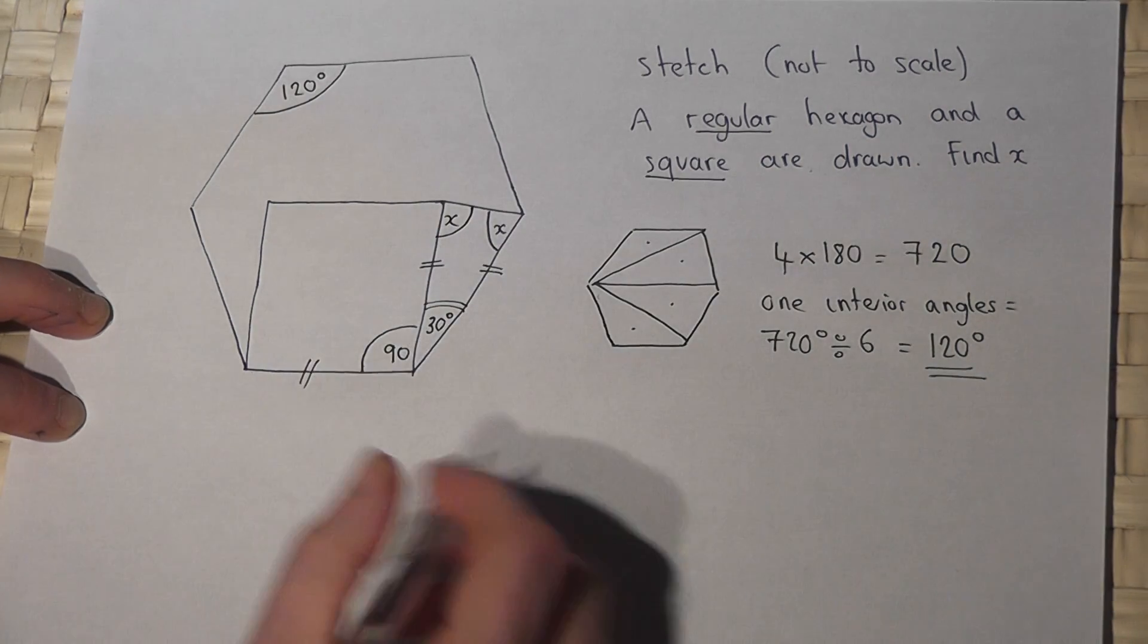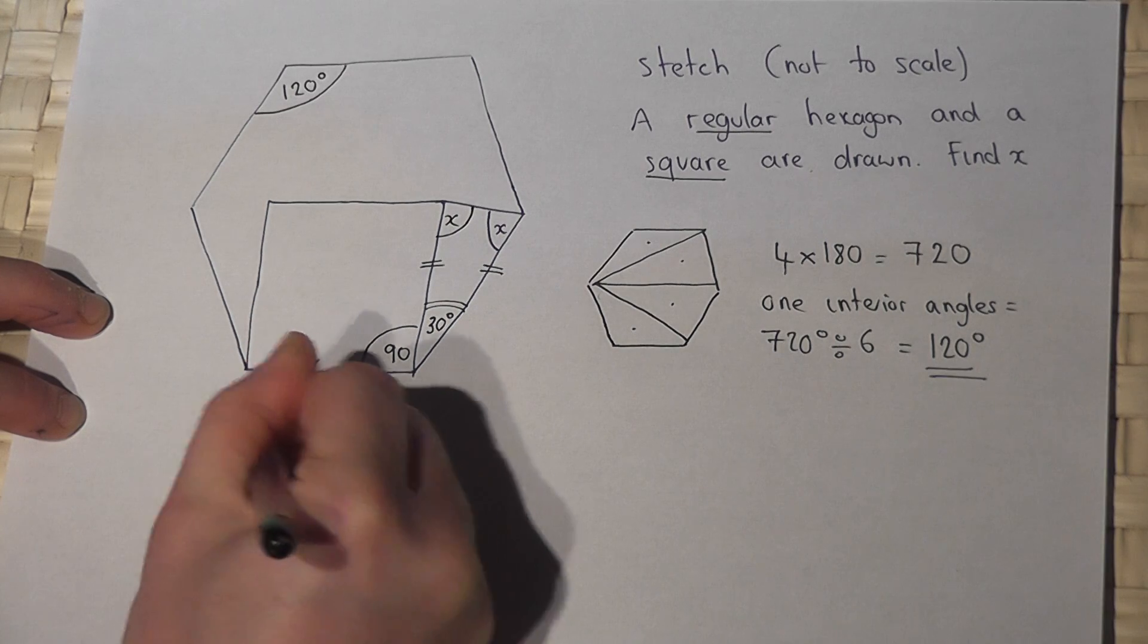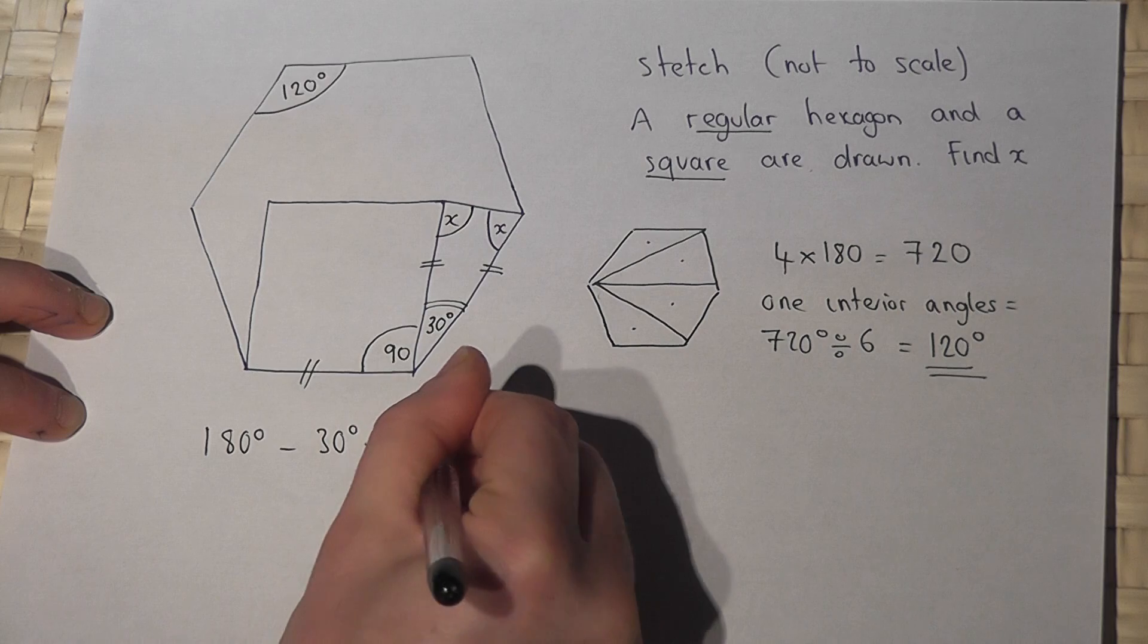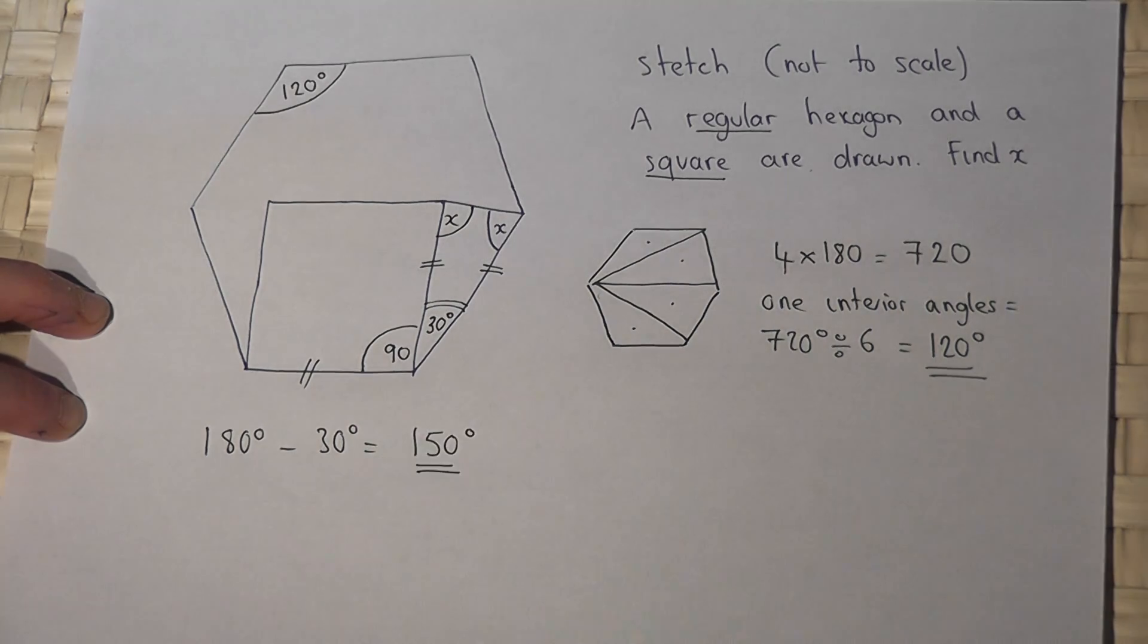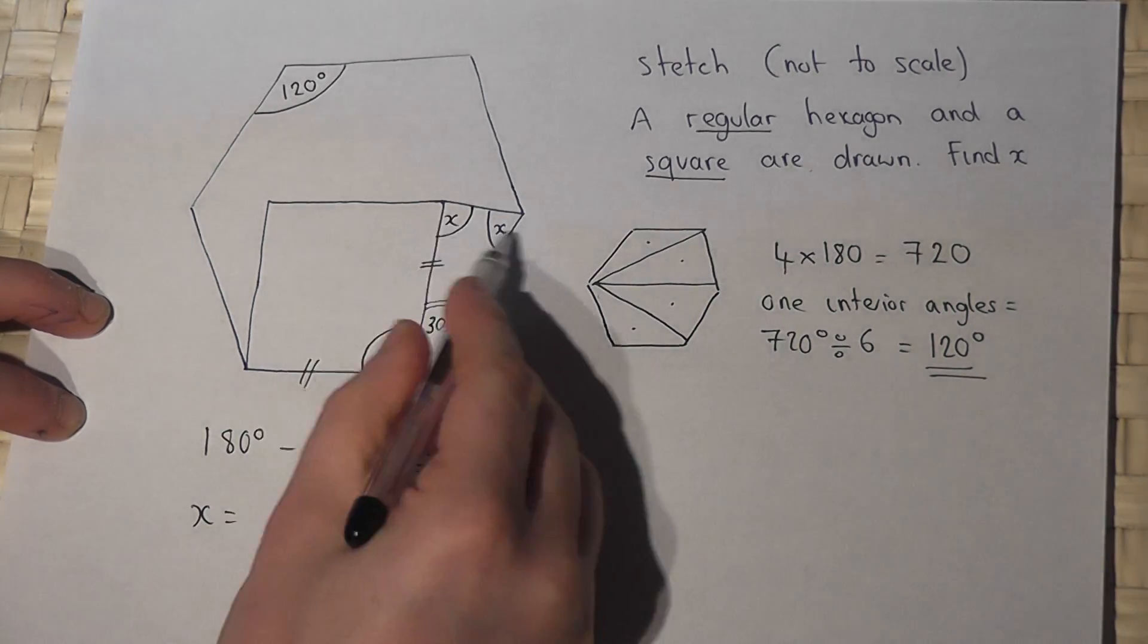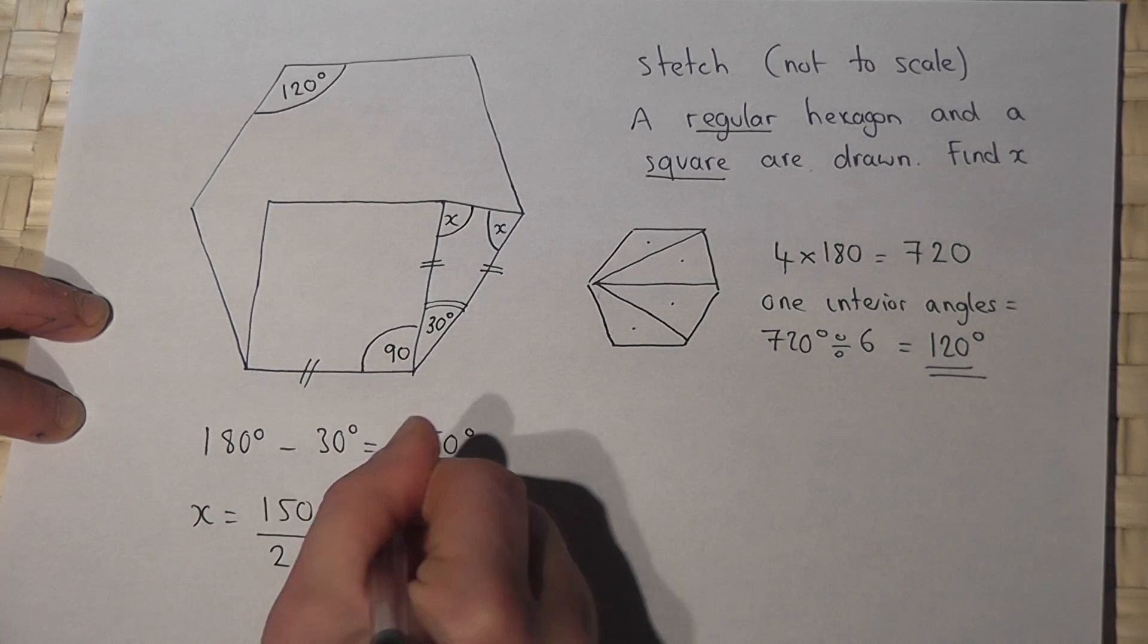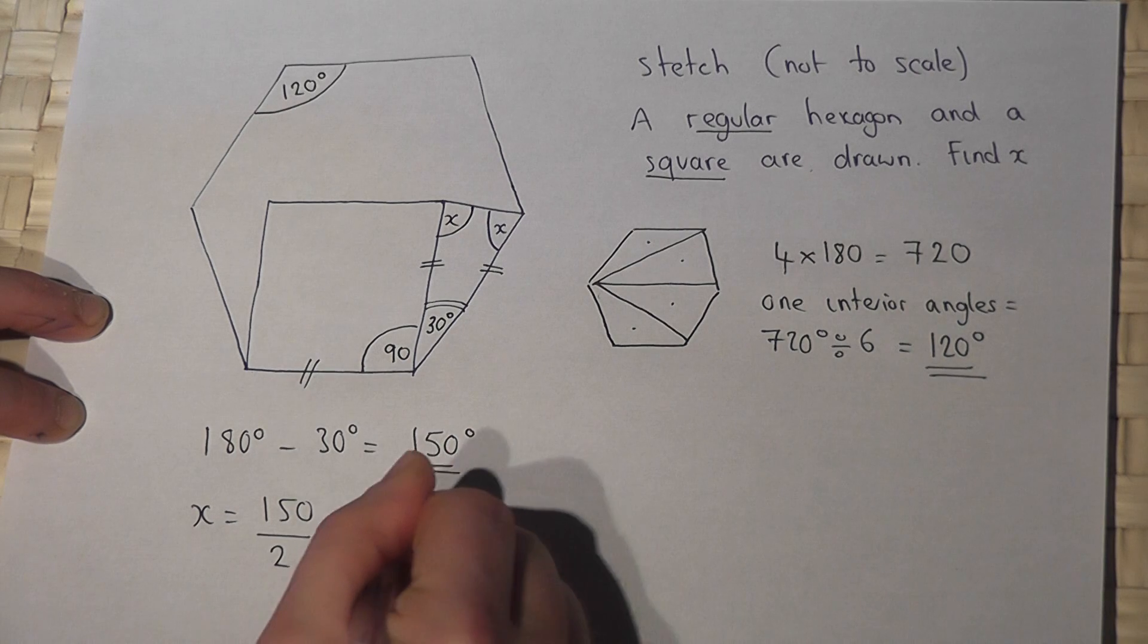So to find x, I do 180 degrees for the triangle, take away the 30, which is 150 degrees. I just share this in 2. So 150 divided by 2 is 75 degrees. So x is equal to 75 degrees.